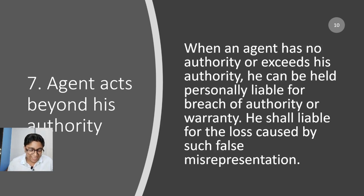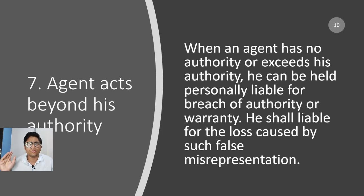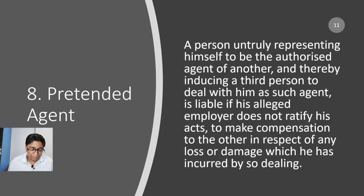Next is when the agent acts beyond his authority. If you have given me certain authority to act as your agent and I cross that limit — doing certain things on my own — I will be personally responsible for those actions, not you, because you did not give me authority to do so. In that situation, the agent becomes personally liable.